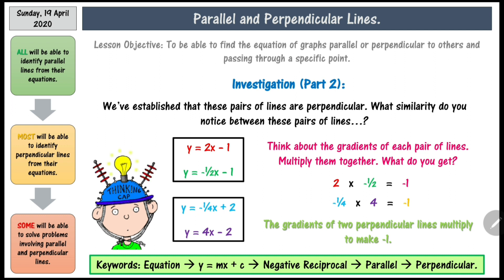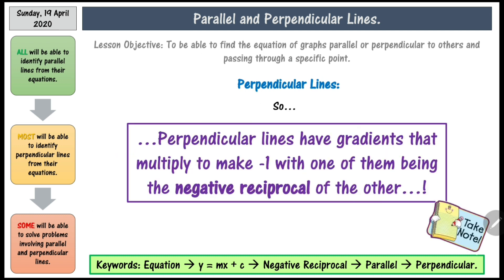The one rule that you need to know is that the gradients of two perpendicular lines multiply to make minus 1, with one of them being the negative reciprocal of the other. If you see the link on the top right-hand side of the screen, it will take you to another video which will explain how to find the reciprocal and the negative reciprocal, and clarify how you can identify whether two lines are perpendicular or not.